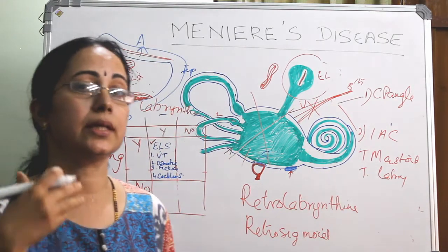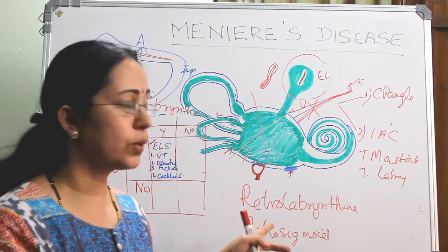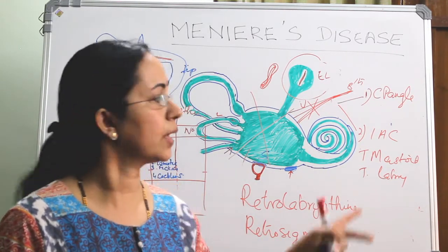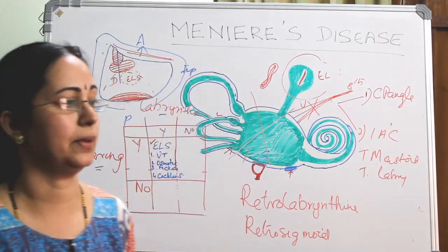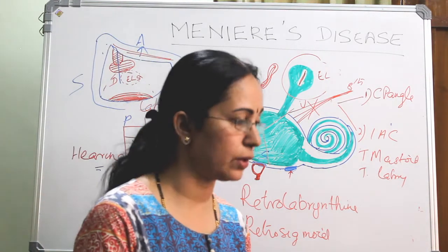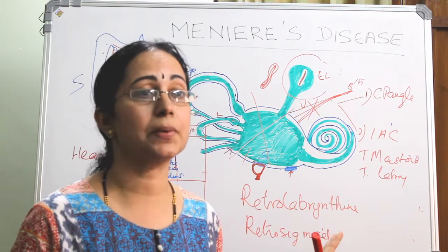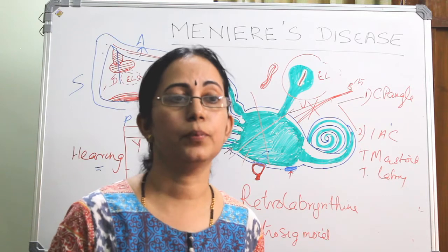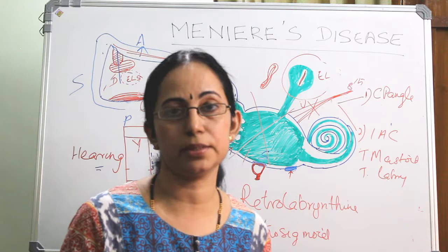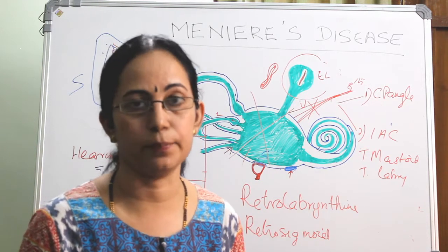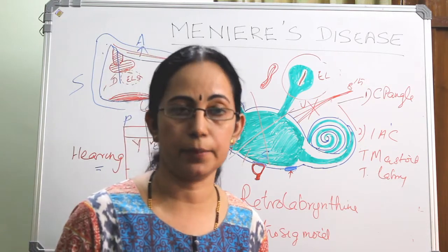The CP angle is a bit posterior, so retrolabyrinthine or retrosigmoid approach is used. For the internal auditory canal, transmastoid or translabyrinthine is used. I will explain these approaches later — if you want them explained earlier, just put it in the comment box and I will explain that approach.